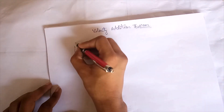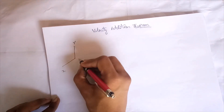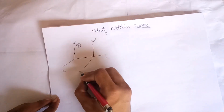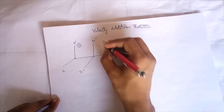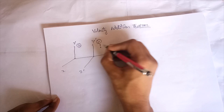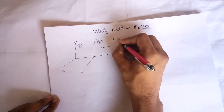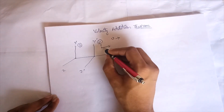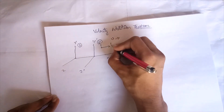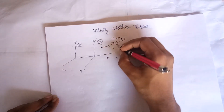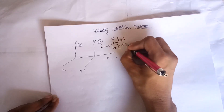First of all, let us make its diagram. This is the y-axis, z-axis, and x-axis — this is the stationary frame of reference. This is y-dash, z-dash, and x-dash — the non-stationary frame of reference. This is a particle P traveling in this direction. The coordinates of this particle with respect to the stationary frame are x, y, z, and t, and with respect to the non-stationary frame are x-dash, y-dash, z-dash, and t-dash.